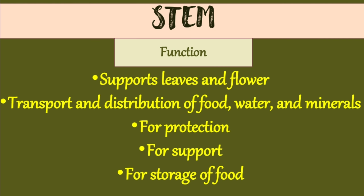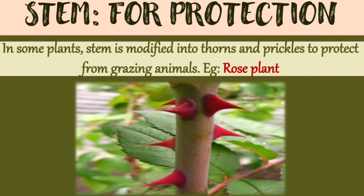The functions of the stem include: supporting leaves and flowers; transporting and distributing food, water, and minerals to other parts of the plant; protection; support; and storage of food. For protection, in some plants the stem is modified as thorns and prickles to protect them from grazing animals — the example is the rose plant.